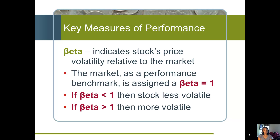Beta measures risk or volatility. In technical terms, it tells you how the returns of a stock move in relation to the returns of the market. A stock with a beta of 1 moves pretty much in line with the market — if the market is up, this stock is up by just as much, and the reverse is true in down times. If a stock has a beta of less than 1, then that stock is less volatile than the market.